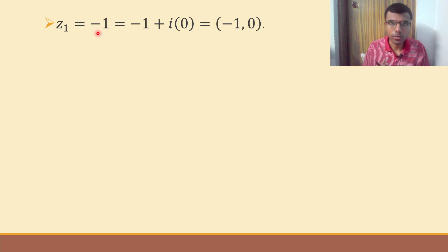I'm going to write it like this: z1 as minus 1 plus i into 0, it's totally okay, so this is nothing but minus 1 comma 0 because a complex number can be represented on the two-dimensional plane, on a Cartesian plane we can represent this.